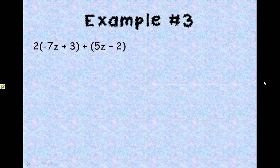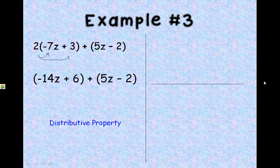Okay, now if you check this problem out, we have 2 times a negative 7z plus 3 plus 5z minus 2. We're going to have to first use the distributive property to clean this problem up. So we have 2 times the negative 7z, which would give us a negative 14z. And then we're going to distribute that 2 as well to the 3. So 2 times 3 is 6. So we're going to bring that down.